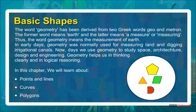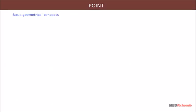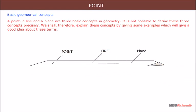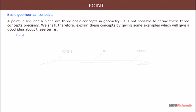Nowadays we use geometry to study space, architecture, design, and engineering. Geometry helps us in thinking clearly and in logical reasoning. In this chapter we will learn about points, lines, curves, and polygons. A point, a line, and a plane are three basic concepts in geometry. It is not possible to define these three concepts precisely.